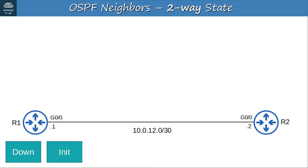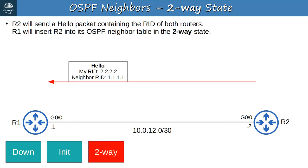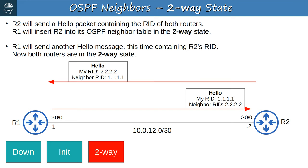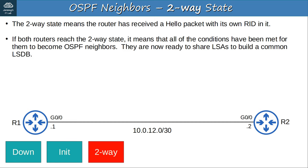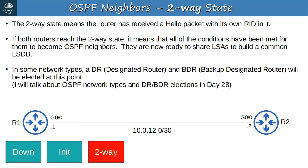The next state is the Two-Way state. R2 will send a hello packet containing the RID of both routers. R1 will insert R2 into its OSPF neighbor table in the Two-Way state. Then R1 will send another hello message containing R2's RID, and now both routers are in the Two-Way state. This means all of the conditions have been met for them to become OSPF neighbors and they are ready to share LSAs to build a common LSDB. In some network types, a DR (designated router) and BDR (backup designated router) will be elected at this point — I'll cover that in Day 28.